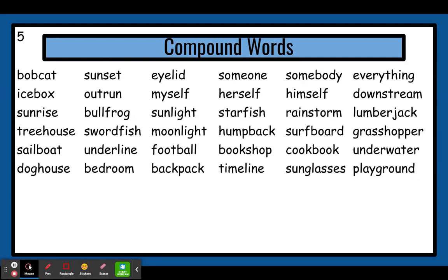Last line. First part: dog, second part: house. Put them together: doghouse. It is a house for your dog. Next word — first part is bed, second part is room. It is a room for your bed. Put it together: bedroom. Next word — first part is back, second part is pack. Put them together: backpack. And that is a pack that you wear on your back.